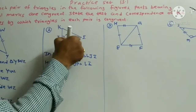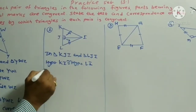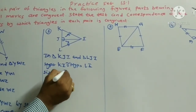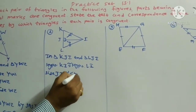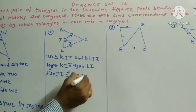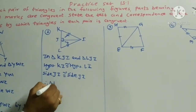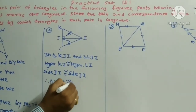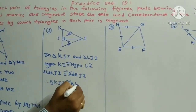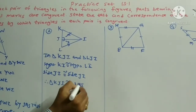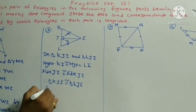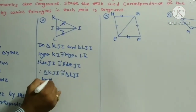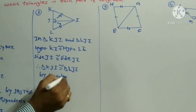Side JI is congruent to side JI because it is the common side. Therefore, triangle KJI is congruent to triangle LJI by the Hypotenuse-Side test.